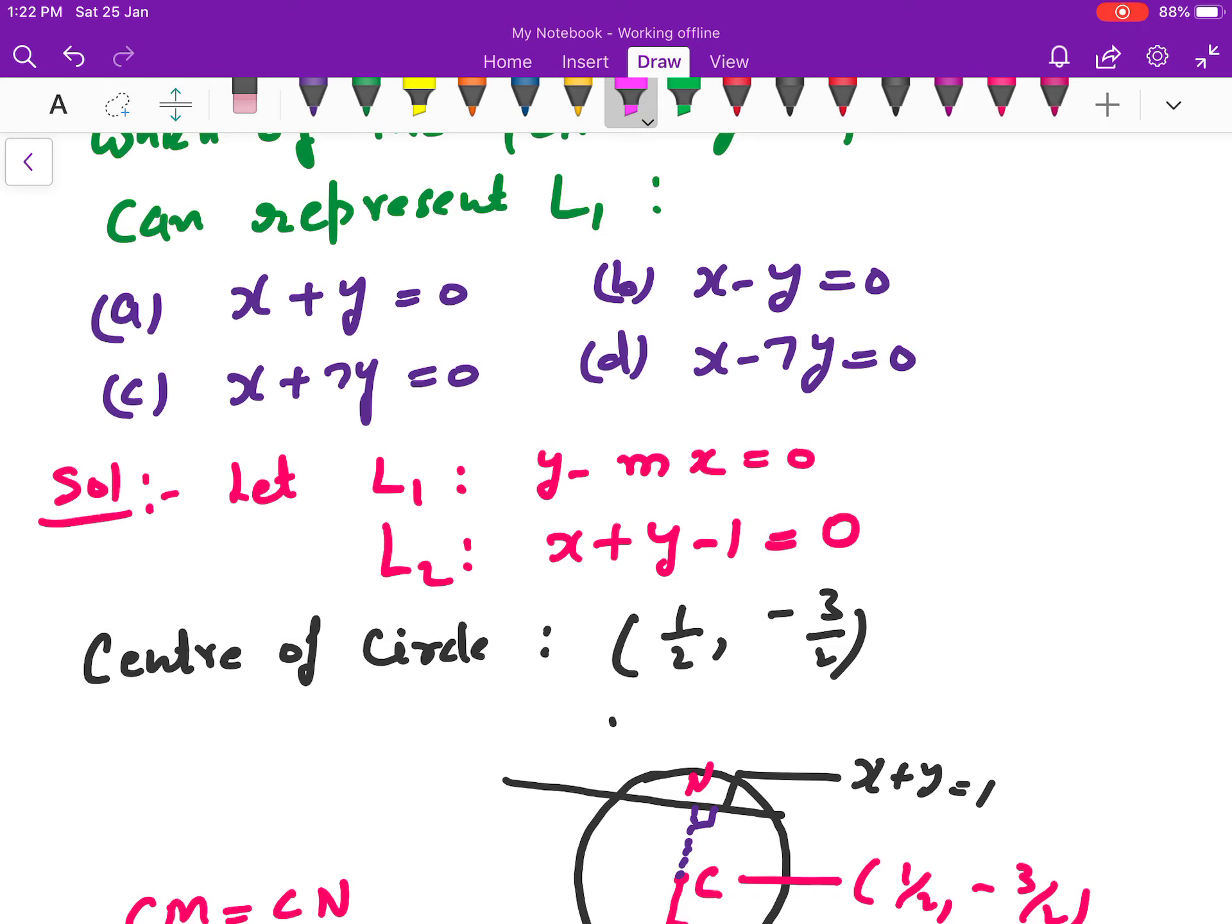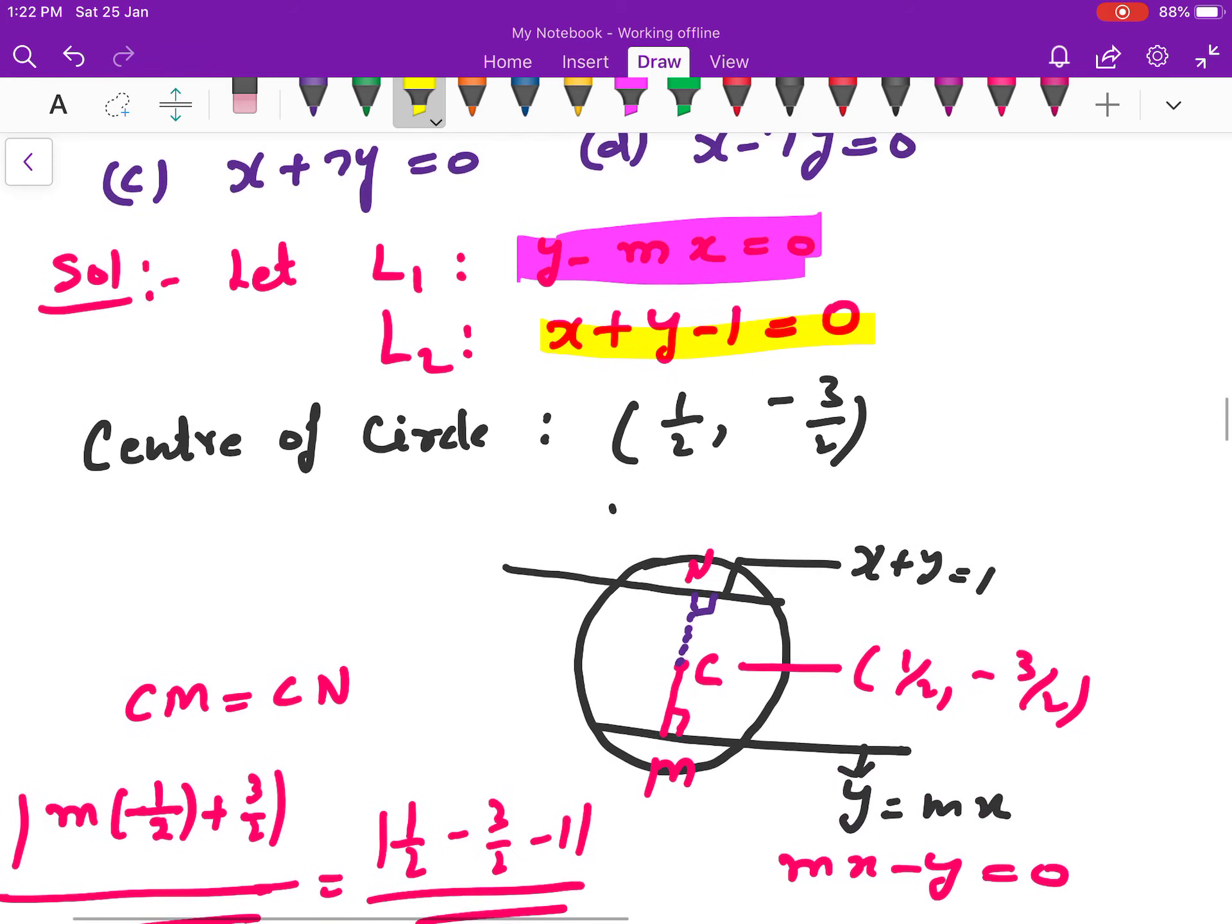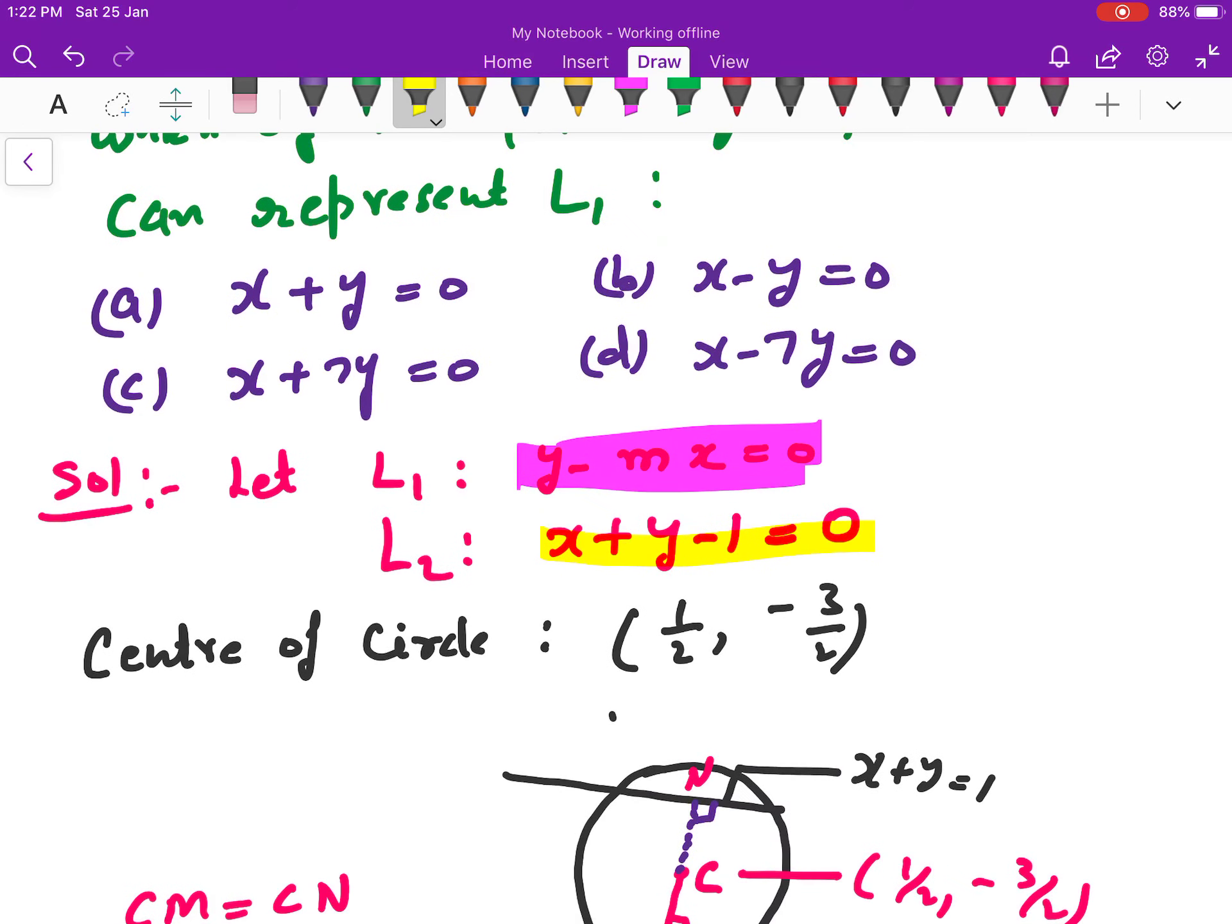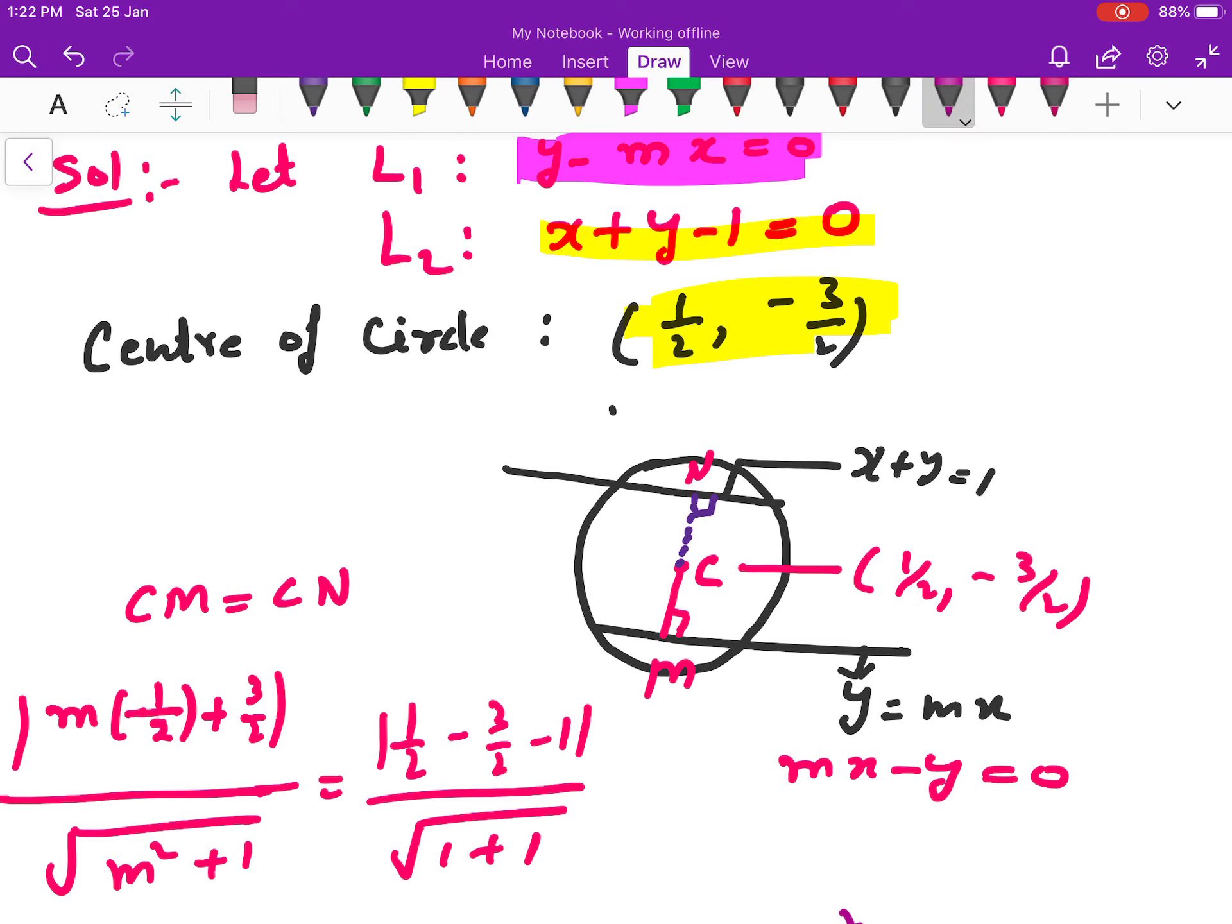The line passing through origin has the formula y = mx. Second line is given here: x + y = 1. The circle has a center. We have a basic concept: when the length of the chord is equal, the perpendicular distance from the center is the same.